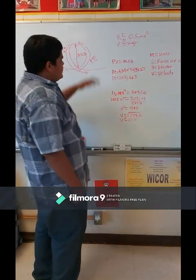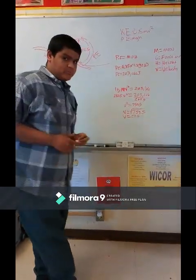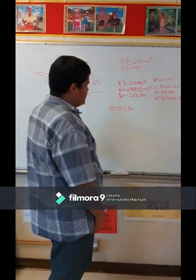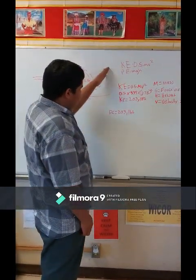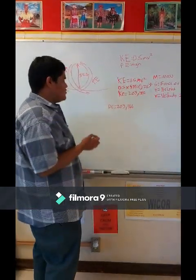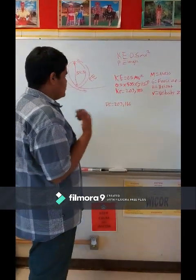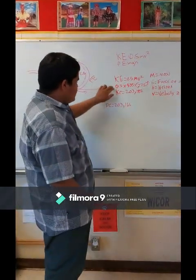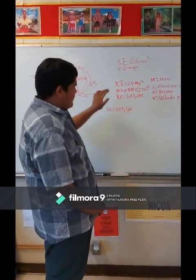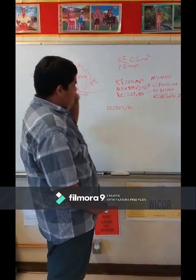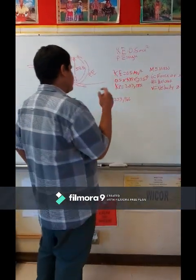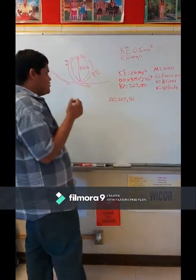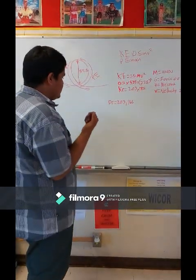Now we can find the kinetic energy. We found the velocity, which is 27.5. So the formula for kinetic energy is 0.5 times mass times velocity squared. So 0.5 times 535 times 27.5 squared, which will give us the kinetic energy, which will be 203,580.